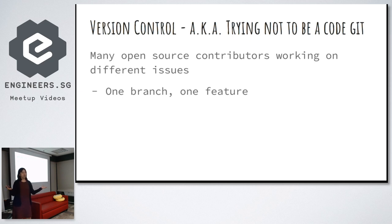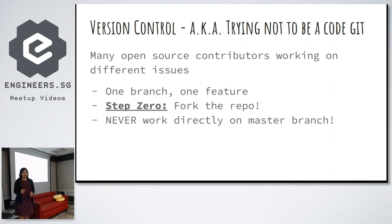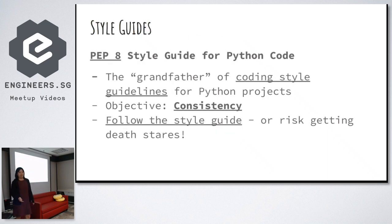Some rules: one branch, one feature — so people know what you're working on for that branch. Step zero, before you start work: fork the repo, not git clone — fork the repo. You need a GitHub account to do that. Third master rule: never ever work directly on the master branch because you might break something. After you fork the repo, make sure you clone the remote forked repo to your local machine, because contributing via the GitHub web page GUI is not good practice.